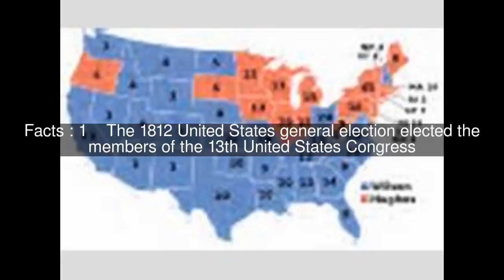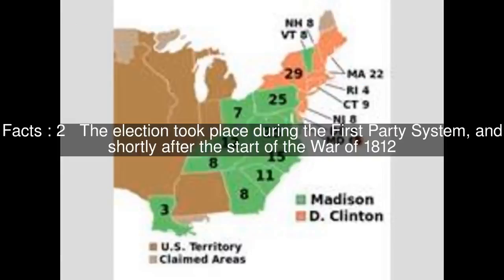The 1812 United States general election elected the members of the 13th United States Congress. The election took place during the first-party system, and shortly after the start of the War of 1812.